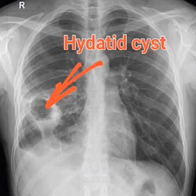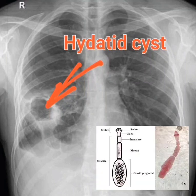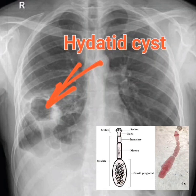A hydatid cyst of the lung is a parasitic infection caused by the larval stage of the tapeworm Echinococcus granulosus. The parasite is found in the intestines of dogs and other carnivores and is passed in their feces. Humans can become infected by ingesting the eggs of the parasite, which can happen through contact with contaminated soil or water, or by eating undercooked meat from an infected animal.